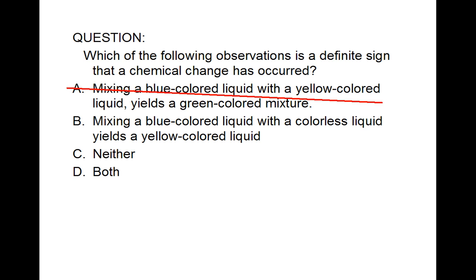Choice B is a definite sign that a chemical reaction has occurred. We would expect that a blue liquid mixed with a colorless liquid would give us something that is light blue, not yellow.